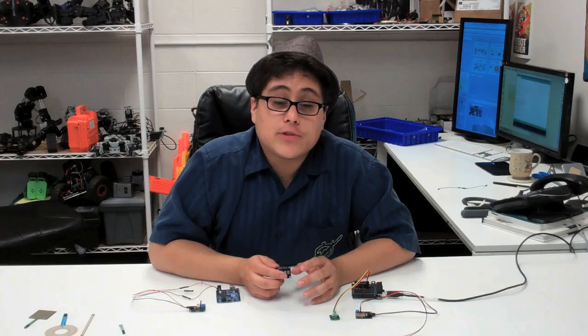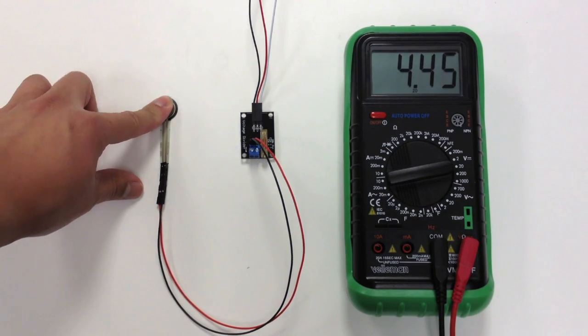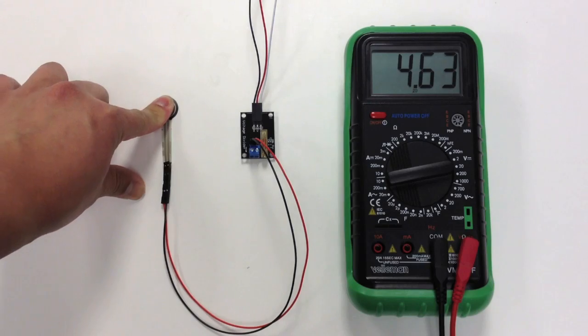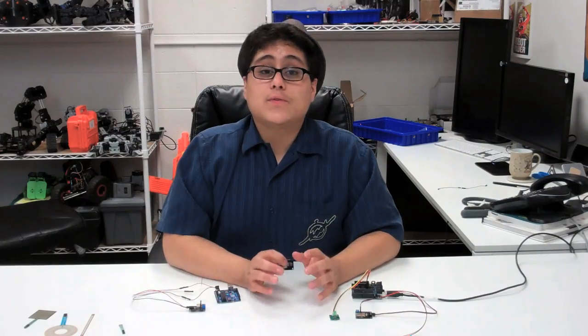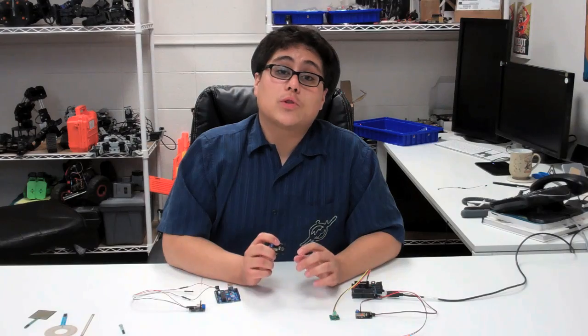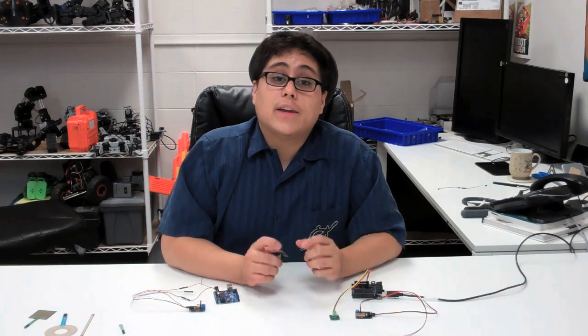When you attach your variable resistor to a fixed resistor you can build a voltage divider circuit. This circuit will generate a voltage based on the analog sensor's input. This voltage can be fed into the Arduino which will interpret it as a value then you can use that value to activate different objects.